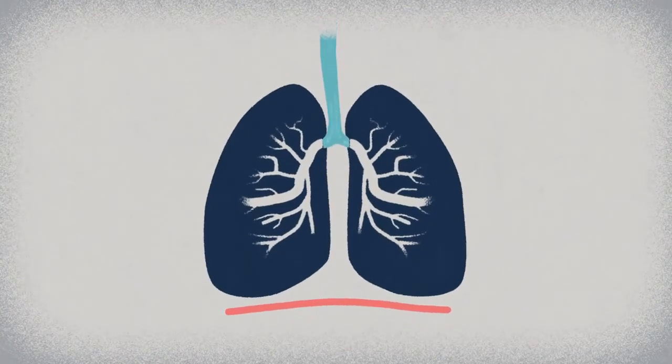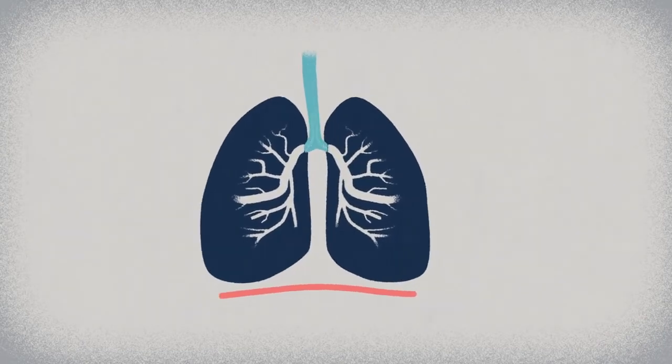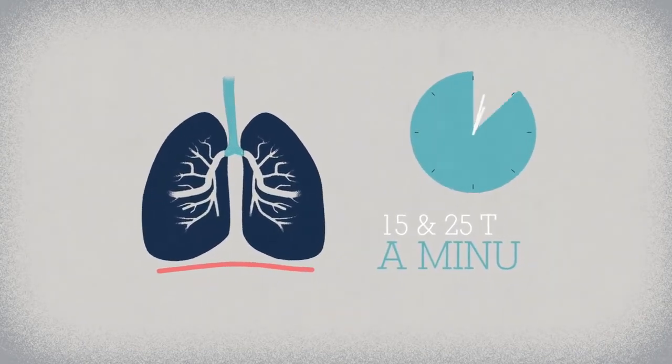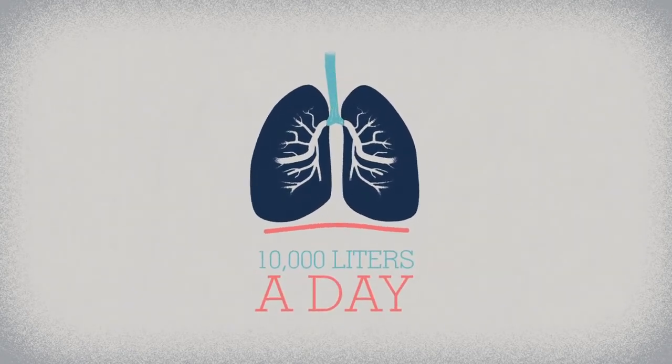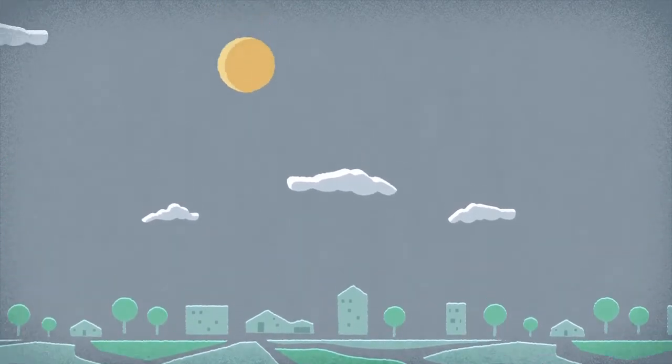So that's how these spongy organs keep our bodies efficiently supplied with air. Lungs inhale and exhale between 15 and 25 times a minute, which amounts to an incredible 10,000 liters of air each day. That's a lot of work, but don't sweat it. Your lungs and your autonomic nervous system have got it covered.